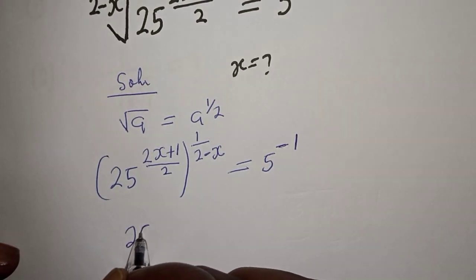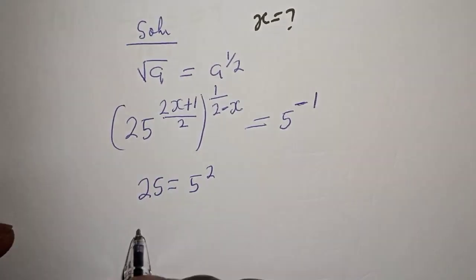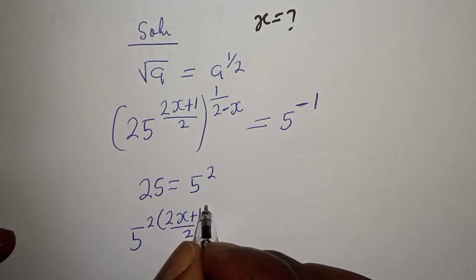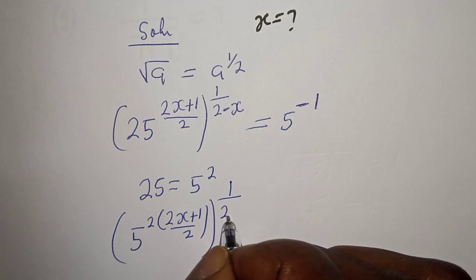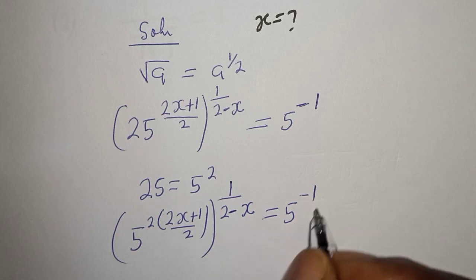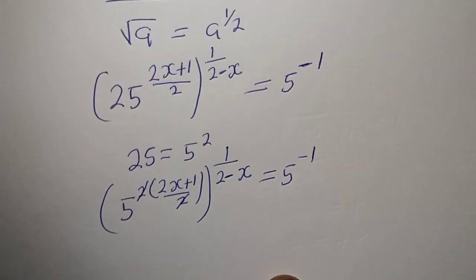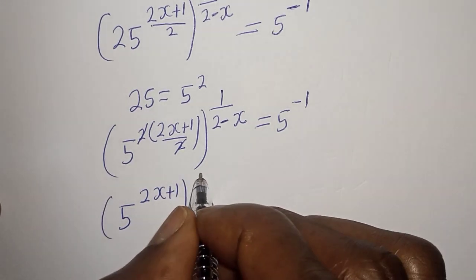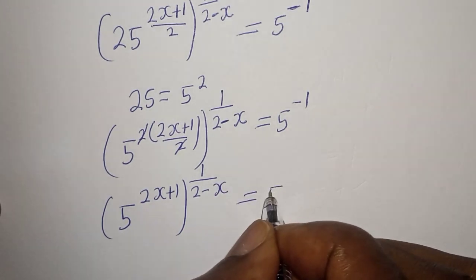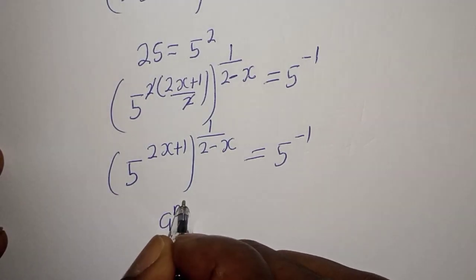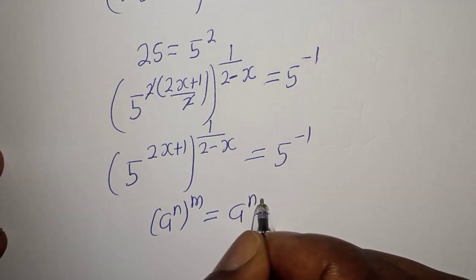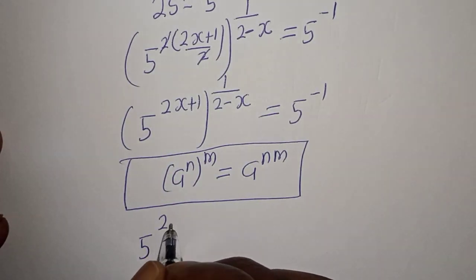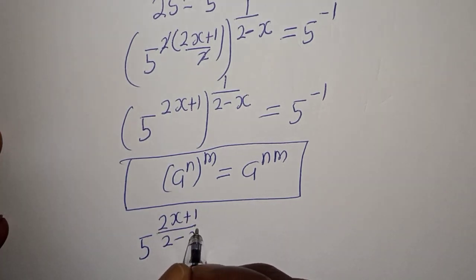Then, since 25 is equal to 5 squared, this becomes 5 squared, bracket (2x plus 1 over 2), raised to power (1 over 2 minus x), equal to 5 raised to power minus 1. So this can be written as 5 raised to power (2x plus 1) times (1 over 2 minus x), equal to 5 raised to power minus 1.